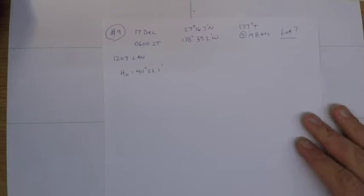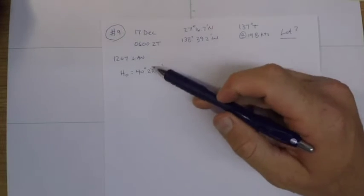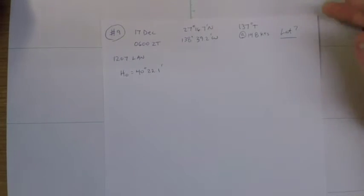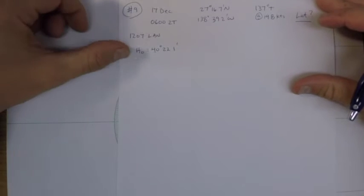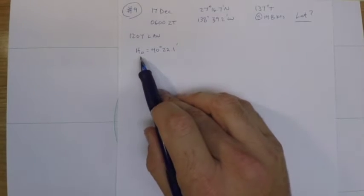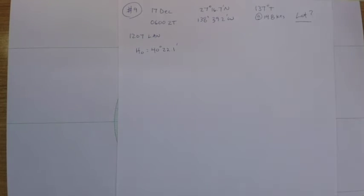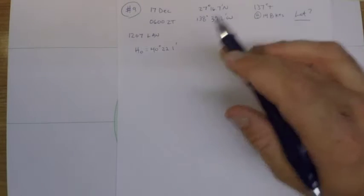So the first thing I'll do is write down all the preliminary information: our date and time, our position, our course and speed, and the fact that our HO—notice that it's HO and not HS. So we do not need to account for height of eye, the semi-diameter of the Sun or anything like that. They've already given us HO.